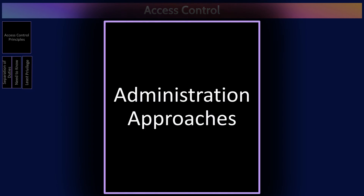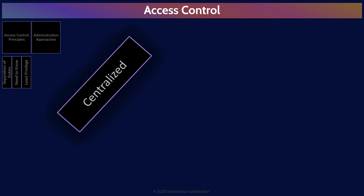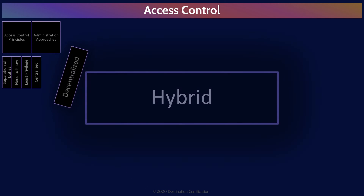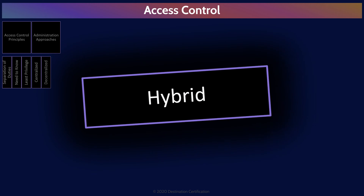When it comes to administering access to systems — the addition, modification, and removal of users — there are three main approaches: centralized, decentralized, and hybrid. In a centralized approach, access to multiple applications is managed through one centralized system. In a decentralized approach, access to multiple applications is managed individually within each application. Many organizations use a hybrid approach, which is simply some combination of centralized and decentralized.